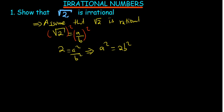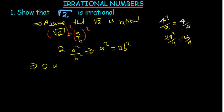Whenever we say A squared can be divided by 2, we can say 2 is a factor of A squared. If it can go into A squared, then it can also go into A.